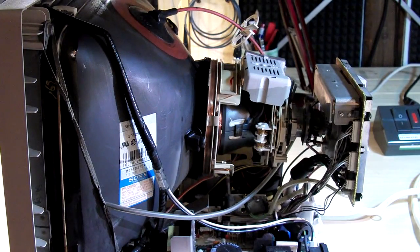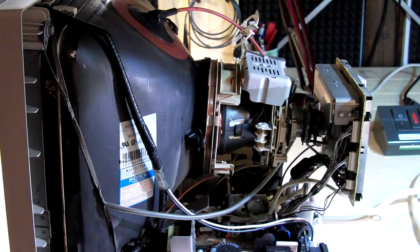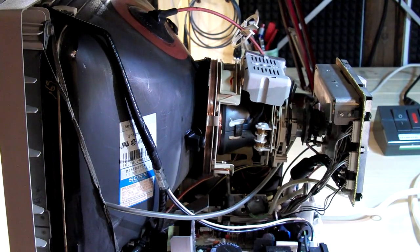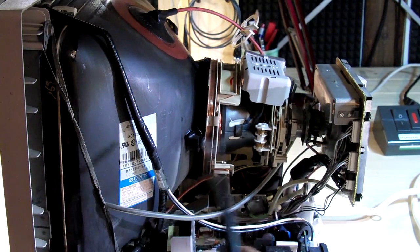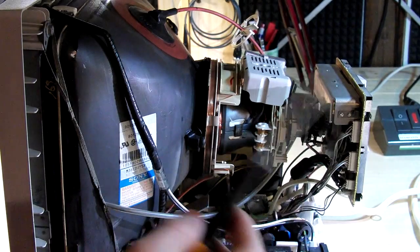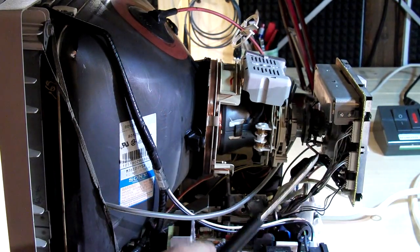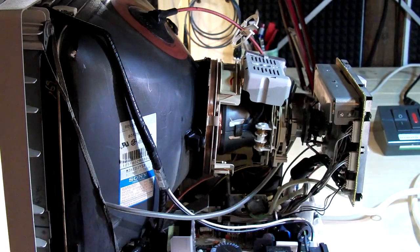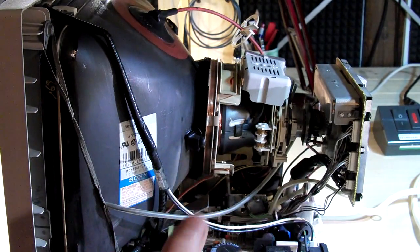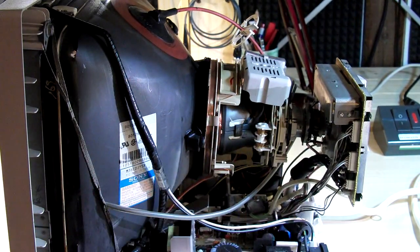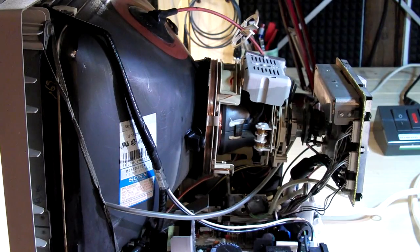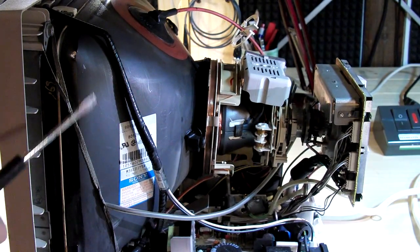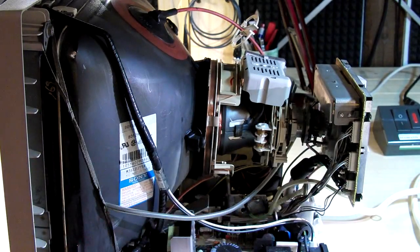CRT is a cathode ray tube and it's just a tube. You can imagine it as a long vacuum tube, just like the tubes you find in an old radio or guitar amplifier. In fact, there are many common elements inside.